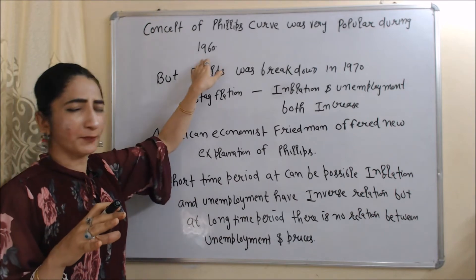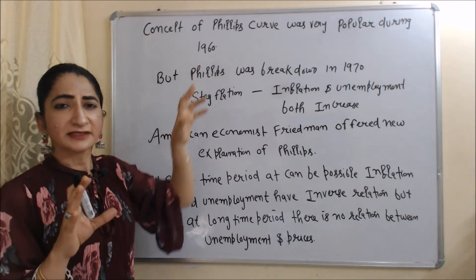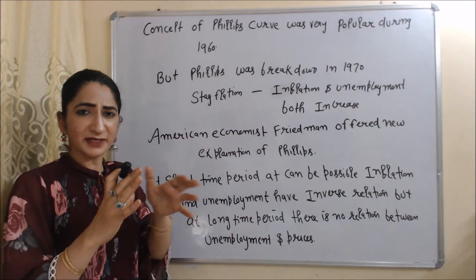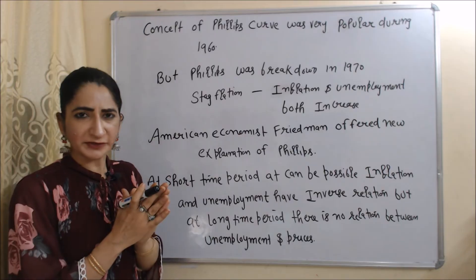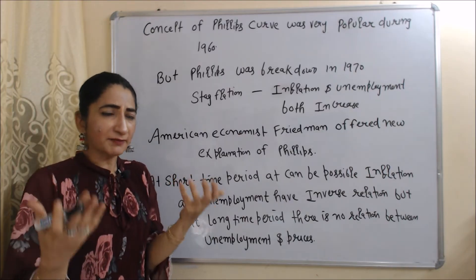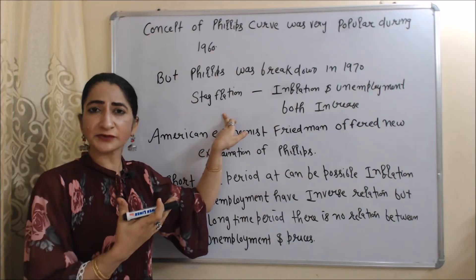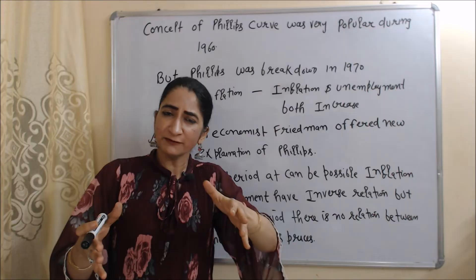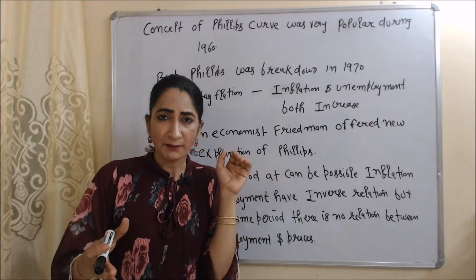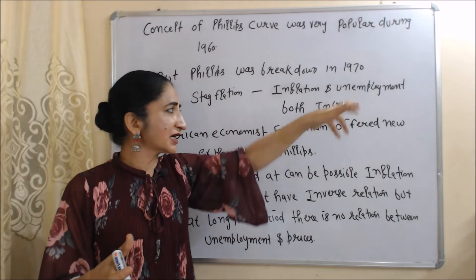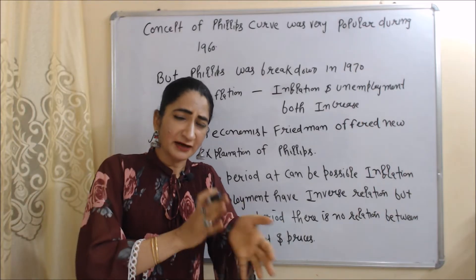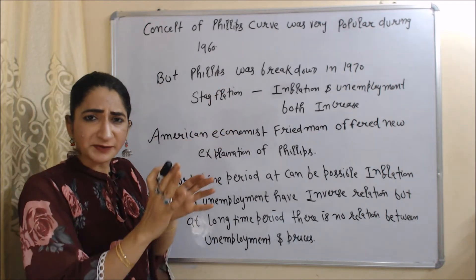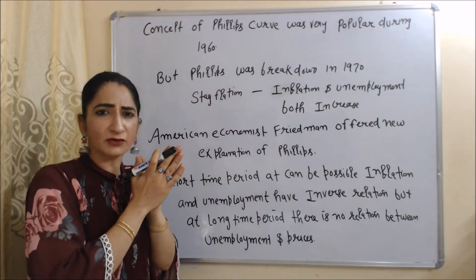The concept of the Phillips Curve was very popular during the 1960s, but this concept failed during the 1970s. That is why this time period is called the breakdown of the Phillips Curve, because the Phillips Curve was not able to explain the concept of stagflation. According to the Phillips Curve, unemployment and inflation have an inverse relation, but during stagflation both inflation and unemployment increased, which the Phillips Curve could not explain.